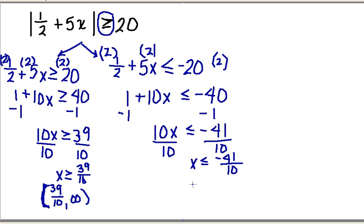Now writing this in interval notation: the smallest value x can take is negative infinity, and the largest is -41/10. Again, I need a square bracket because there's an equal sign, so I must include this endpoint. My final solution is (-∞, -41/10] and [39/10, ∞).